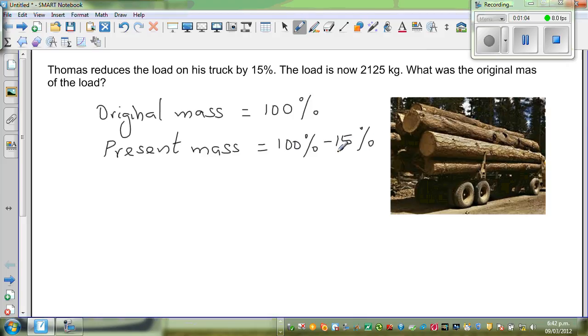So 100 take away 10 is 90, 100 take away 90 and 5, so it is 85%. So I'm going to write this 85%, make up two columns.